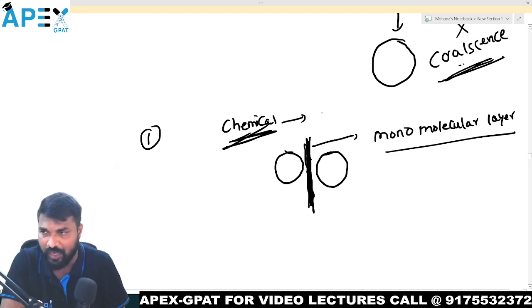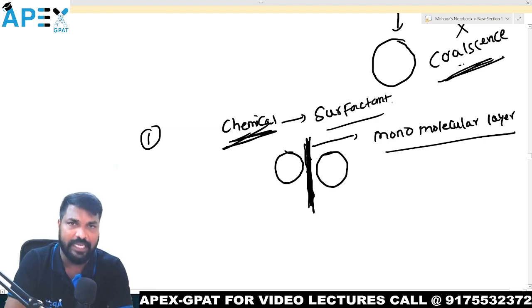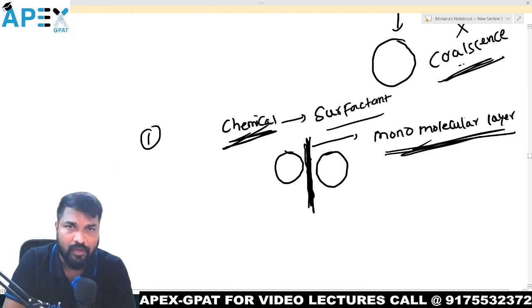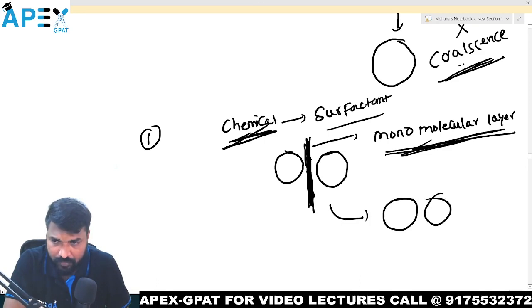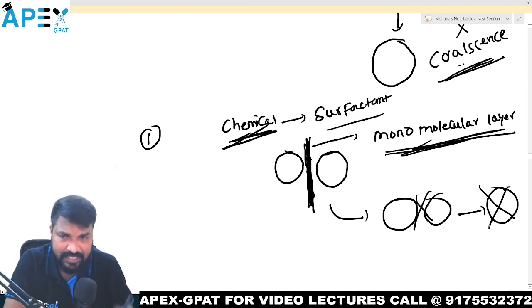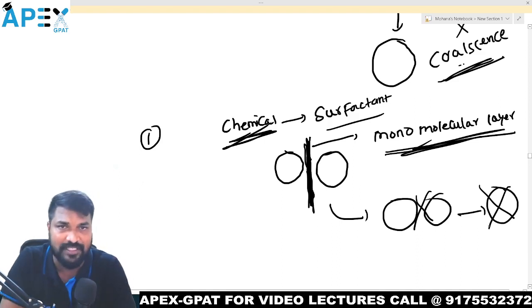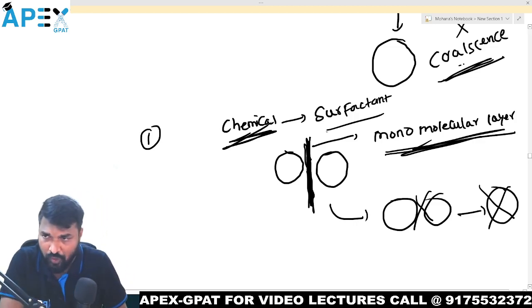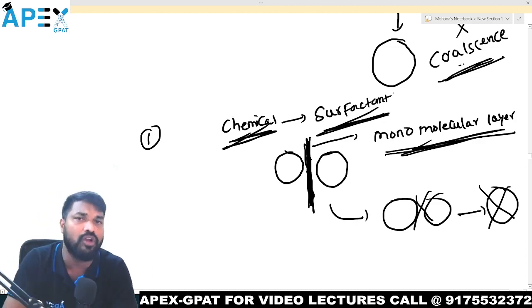The name of this chemical is surfactant. Surfactants absorb at the interface and form a monomolecular layer. When they form the monomolecular layer, the globules don't fuse. When they don't fuse, there is no coalescence, and the system becomes stable. This is the first approach.